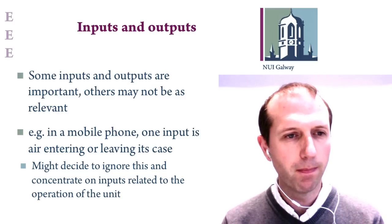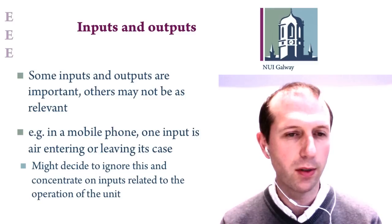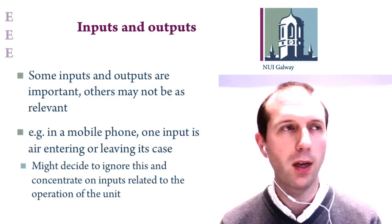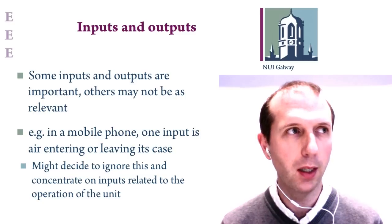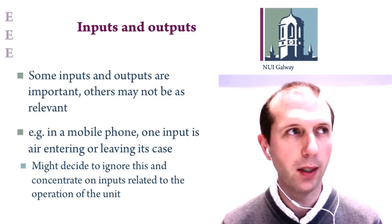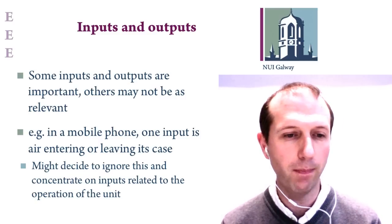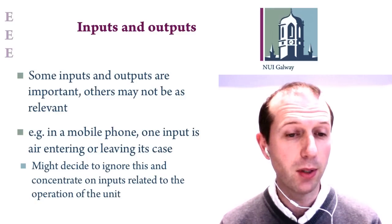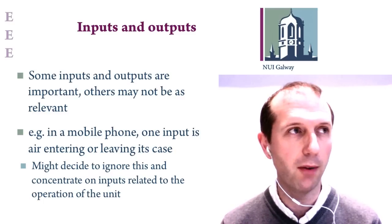Some inputs and outputs are very relevant to the system we're looking at, and others may not be so relevant. For example, with a mobile phone, a lot of thought goes into battery efficiency, signal strength, and call quality. Whereas something like the air entering or leaving the phone's case isn't as important. So we may decide to ignore certain inputs or outputs that are not as relevant to the operation or functioning of a particular system.